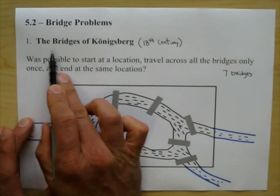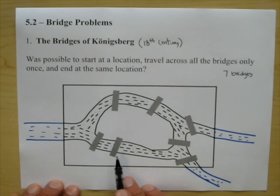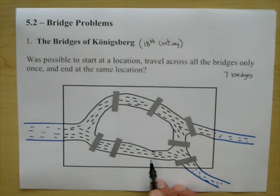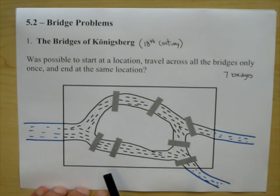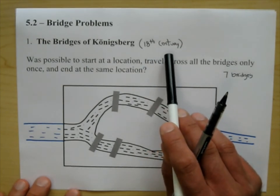Now this is problem number one. And before we read it, we have the townspeople. Some of them like to take walks about the town and cross the bridges. So after a while, perhaps the people started saying, hey, can we take a walk that starts at a location, travels across all the bridges only once and end at the same location. I mean, come on. This is the 18th century. There's no internet. There's no television. That's what you did for fun.